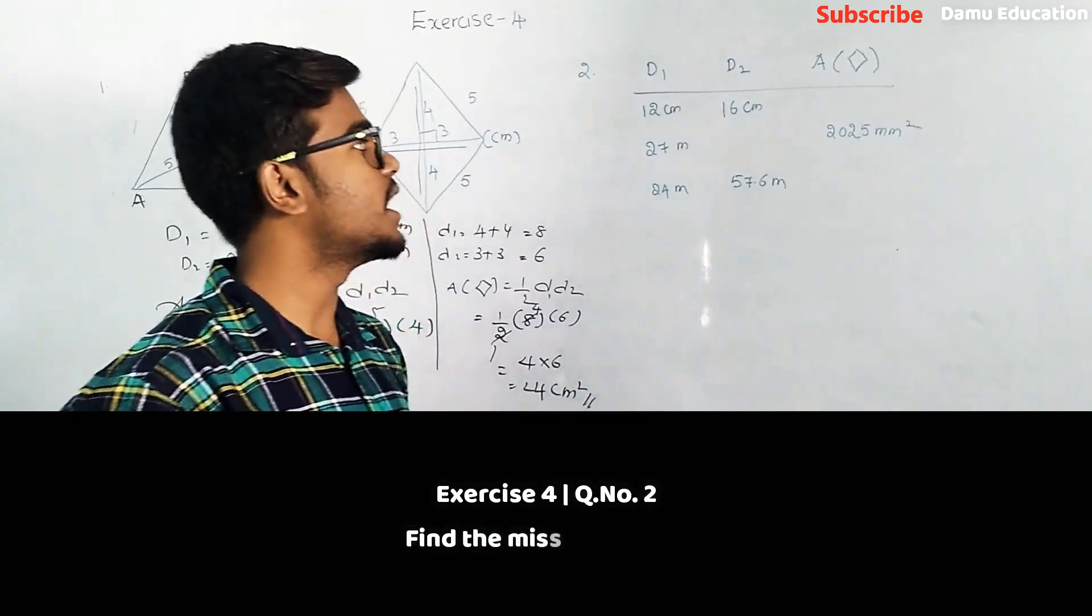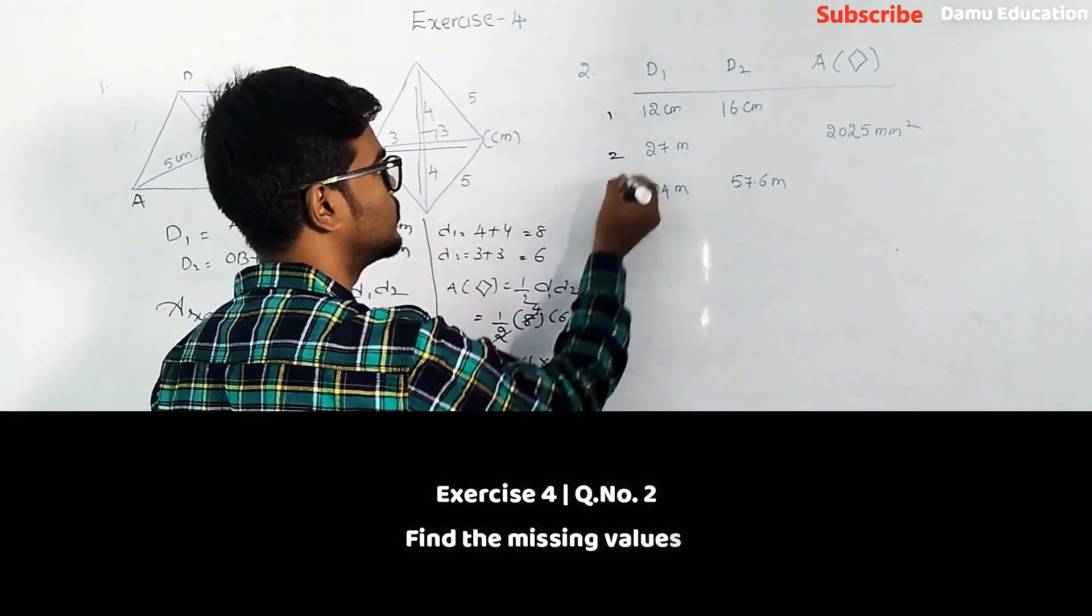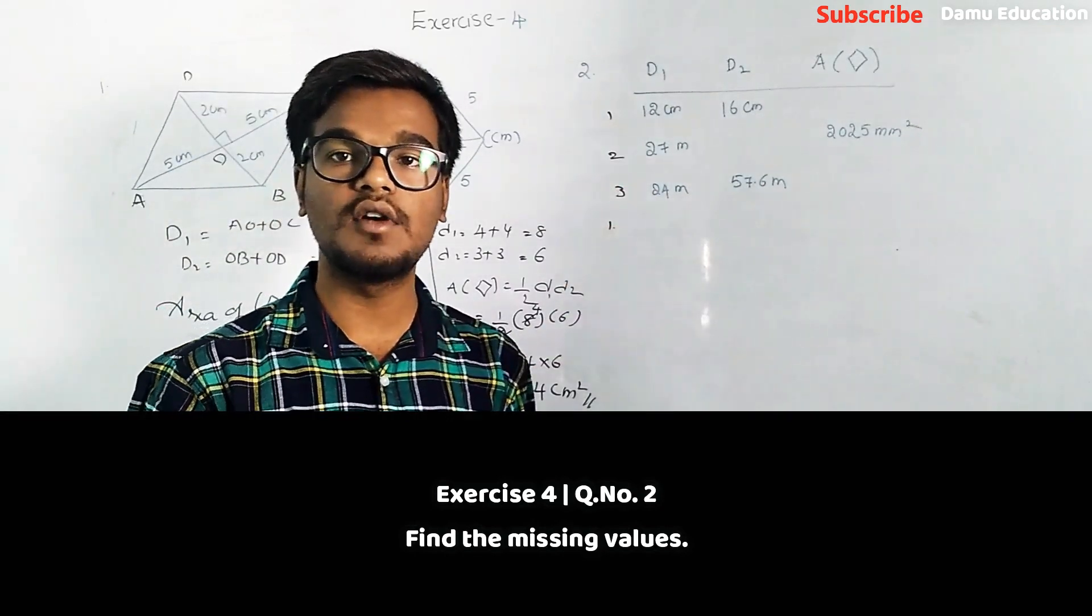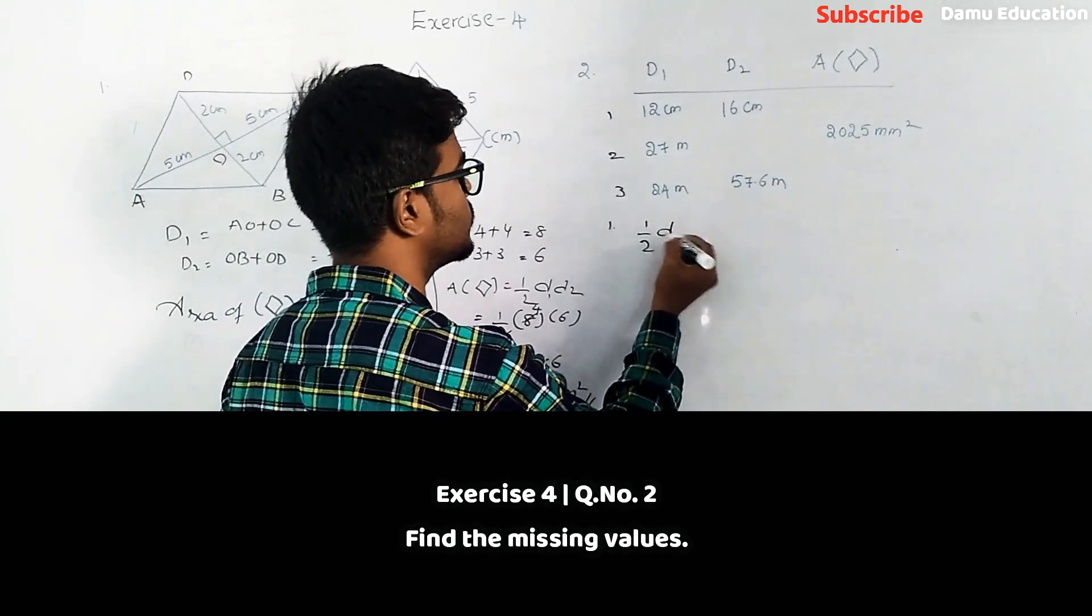Here d1 and d2 they are given for first one: 12 and 16. We need to find the area - half into d1 times d2.